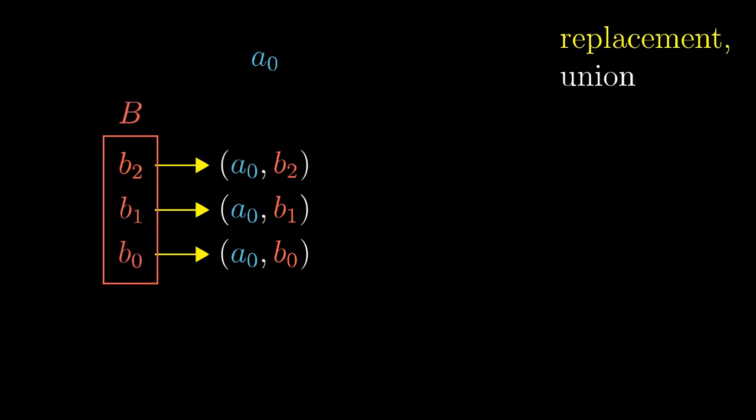Let's fix a single element of set A and consider the following process. Whenever someone gives us an element of the set B, we pack it together with the fixed A into an ordered pair. The axiom of replacement tells us that if we apply this process to all the elements of set B, the results will form a set as well. This way, we can construct a single column in the Cartesian product.